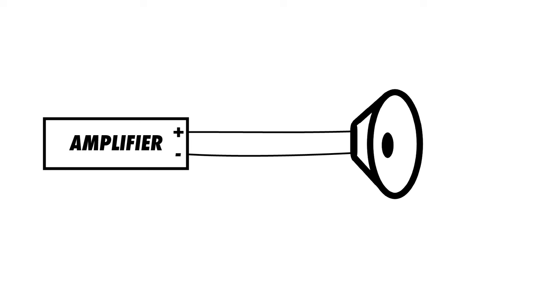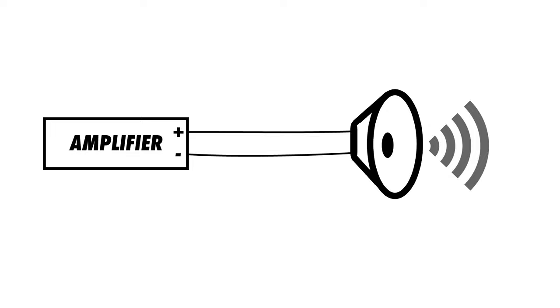In a typical system, an amplifier will provide an electrical signal to a speaker. A portion of that electrical energy will be converted into acoustic energy by the speaker, while the rest will be converted into heat. The total acoustic energy created by the speaker is referred to as the sound power level.